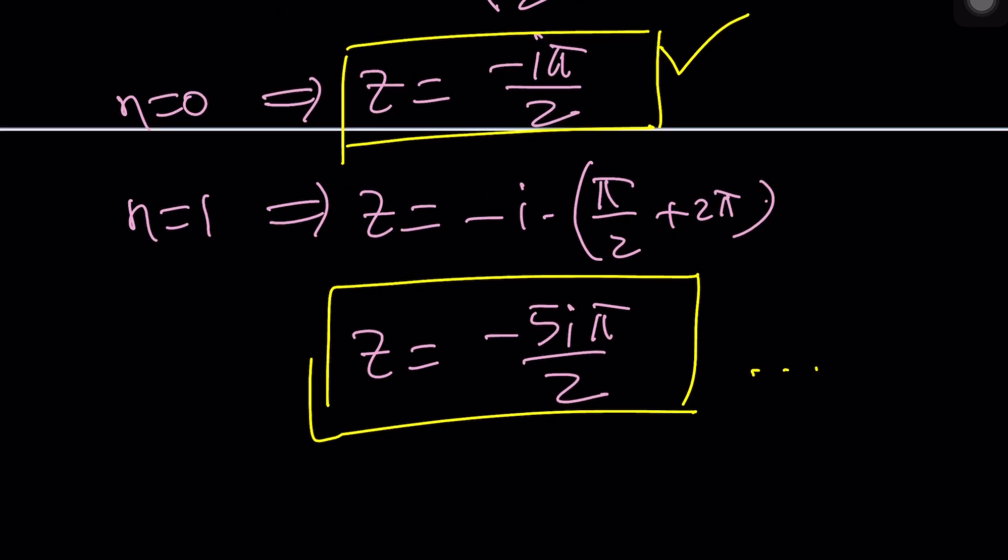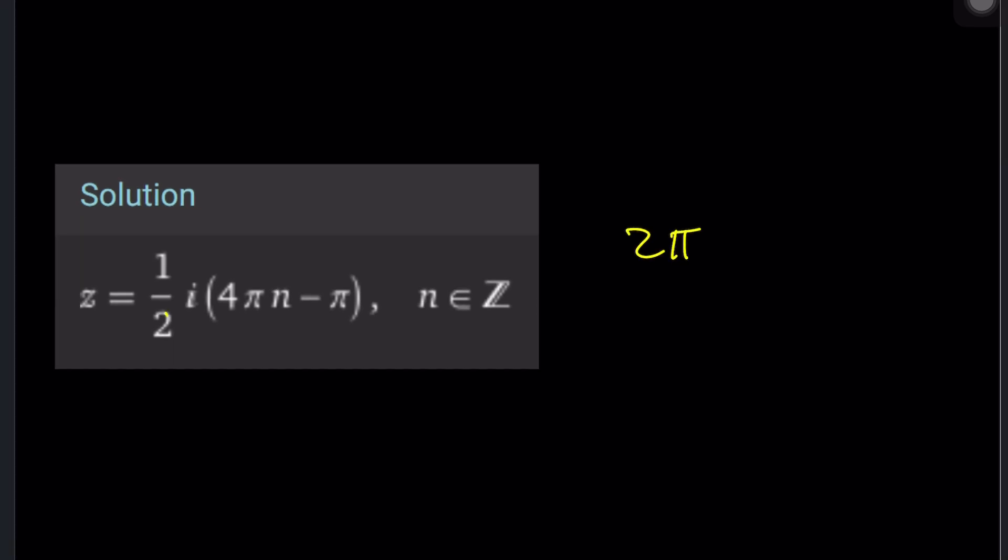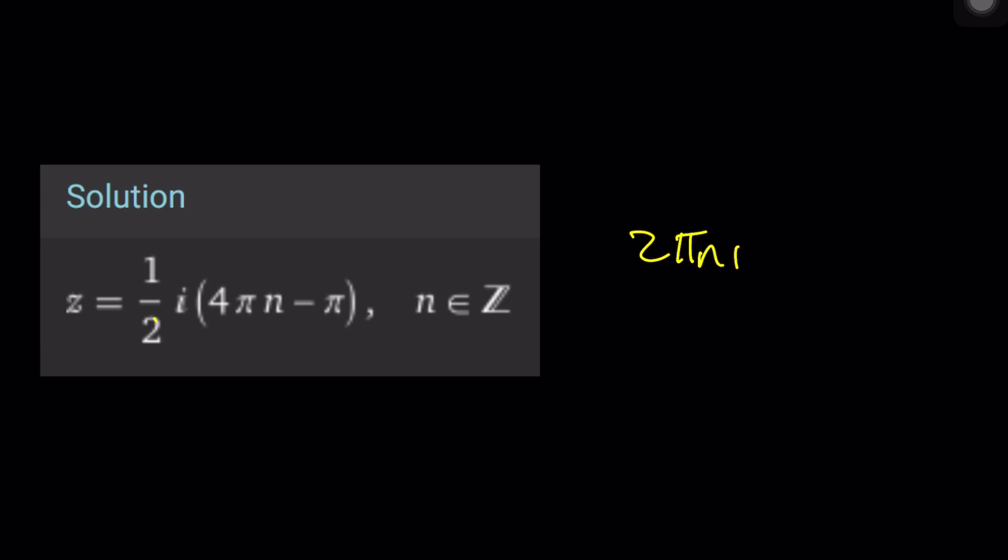Uh-oh, that looks very different, doesn't it? Not really. If you go and distribute, you're going to get two pi n i and then minus i pi over two, which is basically the same thing as saying negative i times pi over two plus two pi n. Same thing written differently.